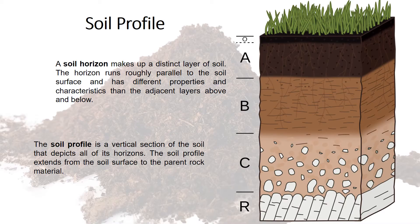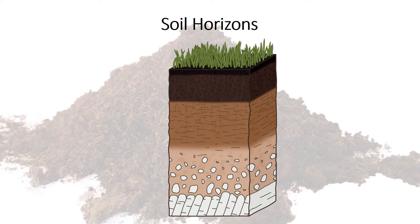As you can see on the screen, the soil profile is a vertical section which depicts all the horizons. It starts from the soil surface up until the bedrock or parent rock material. Soil horizons are basically the layers of the soil. As you can see on the screen, there are different layers with different colors. I want us to look at these horizons individually and their characteristics.